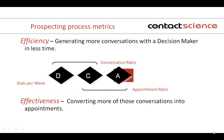The next one is the appointment ratio — that's really the sales effectiveness ratio. How well is our sales team doing in converting those conversations into appointments? If I got into 50 conversations, how many appointments did I get out of those 50 calls? That ratio is very important for managing, coaching, and developing your team — it tells you the skill level and whether you need coaching and training in place to improve that ratio.